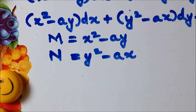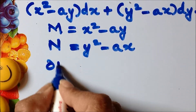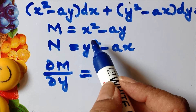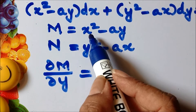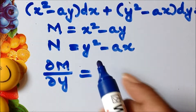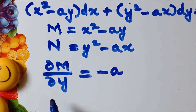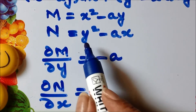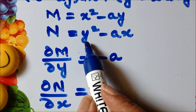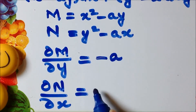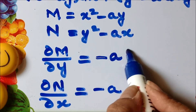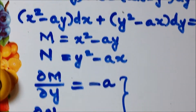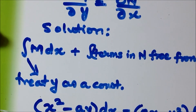Now we will see whether the condition of exactness is satisfied. Differentiating m partially with respect to y, treating x as a constant: derivative of x square is 0, and derivative of minus ay with respect to y is minus a. Next, finding dou n by dou x: since we differentiate n partially with respect to x, y is treated as constant. Differentiating minus ax with respect to x gives minus a. So the condition is satisfied: dou m by dou y is equal to dou n by dou x.